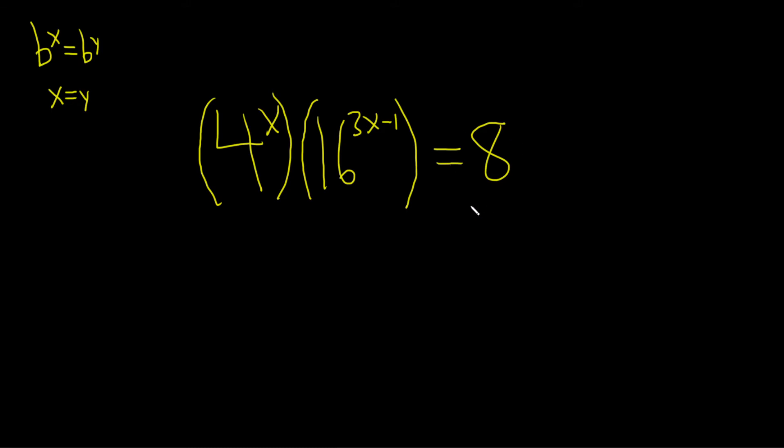So in this case here, we have to think about what our b is going to be. On the left-hand side, we have all kinds of choices. Four and two seem like possibilities. But on the right-hand side, keep in mind that 8 is really 2 cubed. So we want to use 2 as our base.